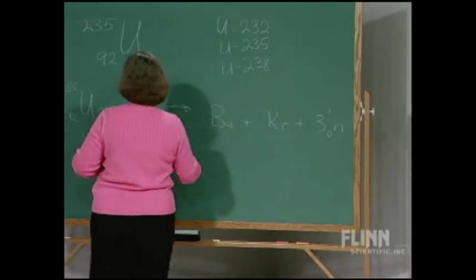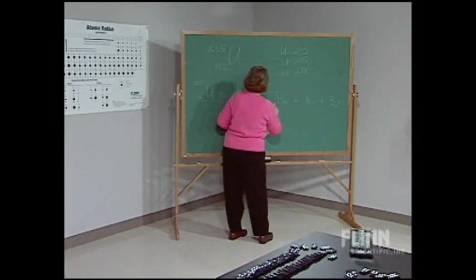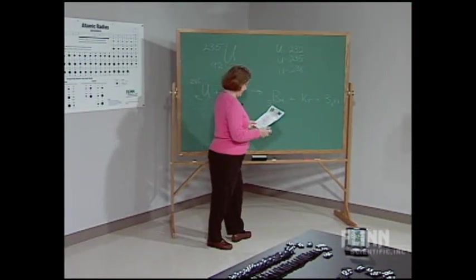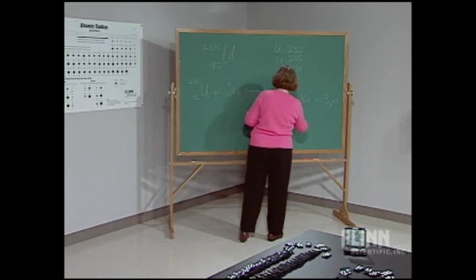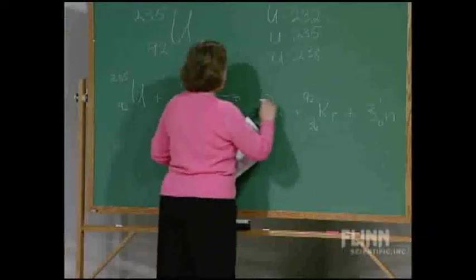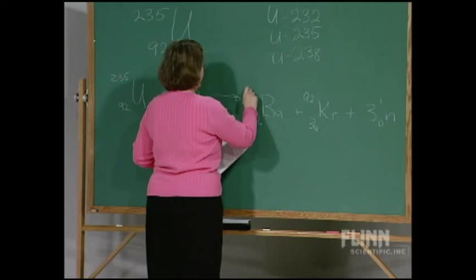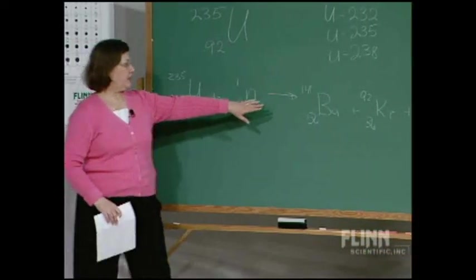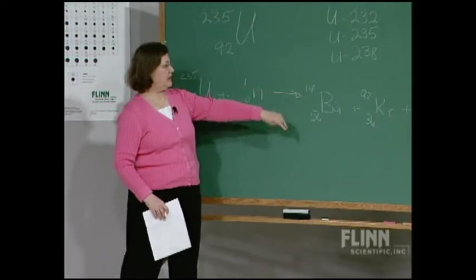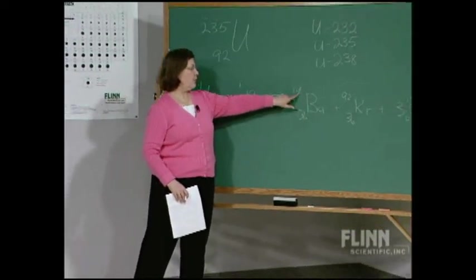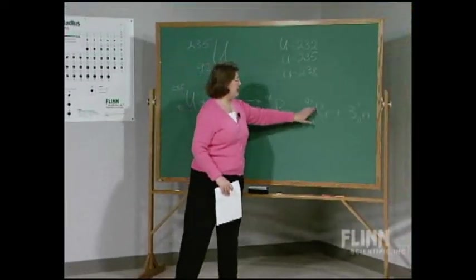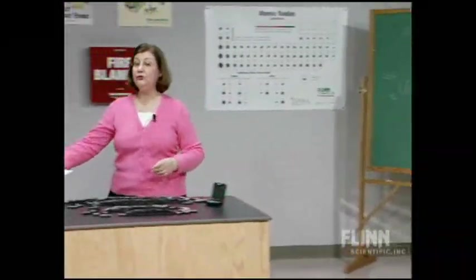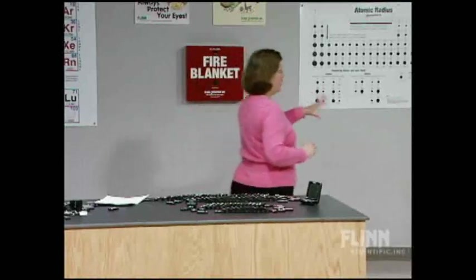Now barium is always 56 as its atomic number. Krypton is always 36. These mass numbers can vary a little bit. Sometimes instead of having barium-141 being produced and krypton-92, it'll be barium-139 and krypton-94. Those are a variable number of neutrons.